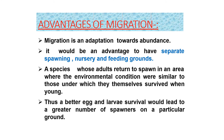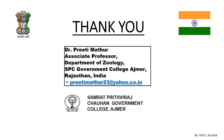Lastly, we will touch on the advantages of migration. Migration is an adaptation towards abundance. It is advantageous to have separate spawning, nursery and feeding grounds. A species whose adults return to spawn in an area where environmental conditions were similar to those under which they themselves survived when young would benefit, as better egg and larval survival leads to a greater number of spawners on a particular ground.